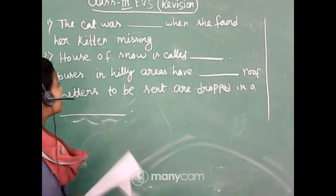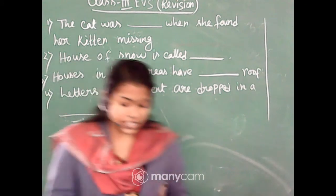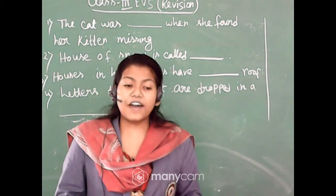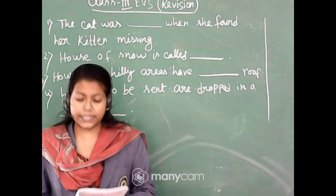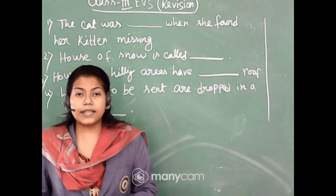The cat was dashed when she found her kitten missing. There are three options that are laughing, crying and choking. So which answer is correct? We have already known that is crying.